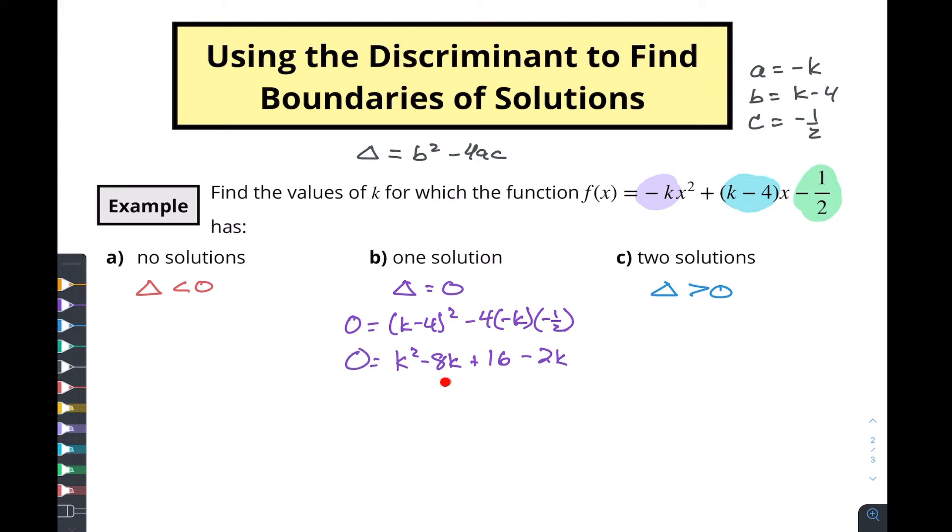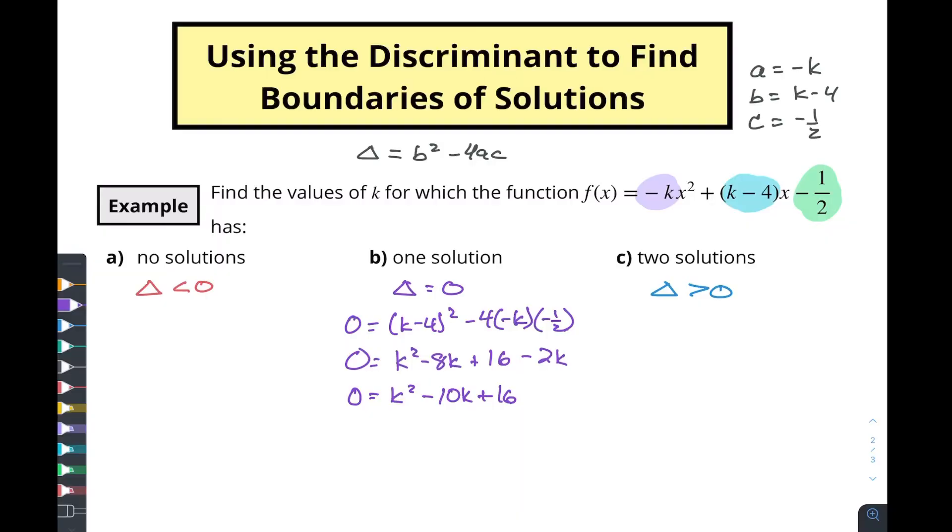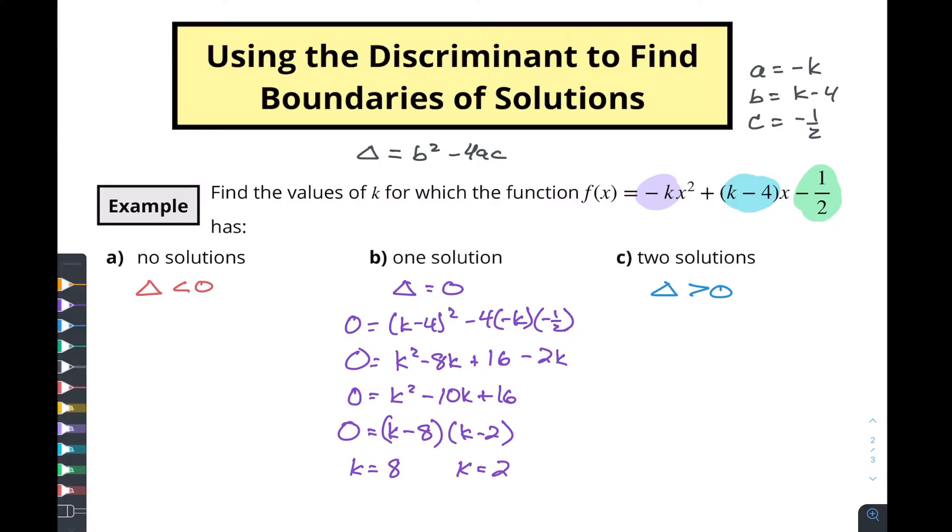So we've got negative 8k and negative 2k. So zero equals k squared minus 10k plus 16. Now if we were to factor this, because now we've got kind of a quadratic within a quadratic. This discriminant value, the finding the values of k is a quadratic in and of itself. So we're gonna find two spots where this thing equals zero. But if we do a quick mental factoring, what are the values that multiply together to give us 16, that add together to give us negative 10? We know that is going to be k minus 8 and k minus 2. So that means k is going to either equal 8 or k is going to equal 2. So at those two values, we are gonna have one solution for this quadratic right here.